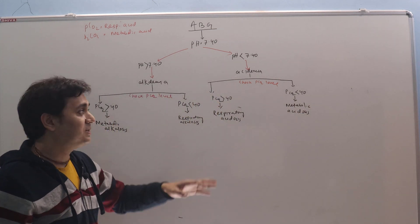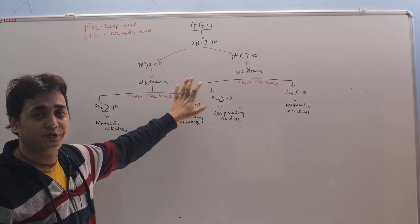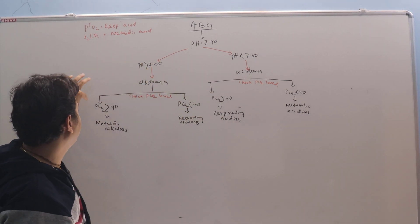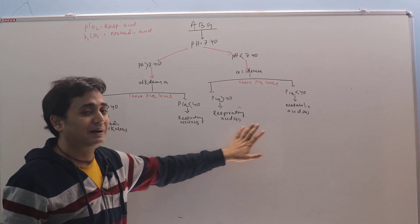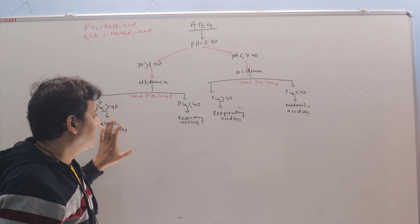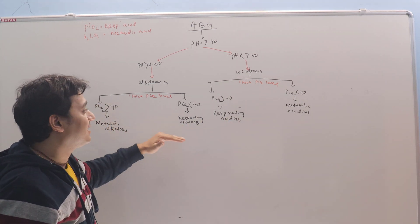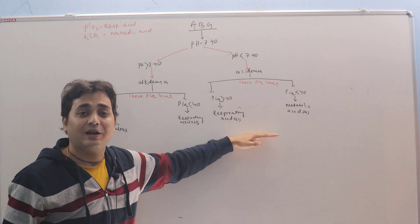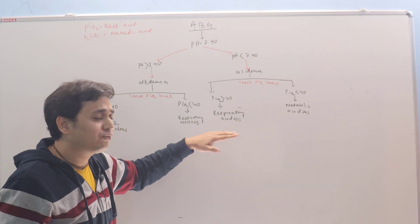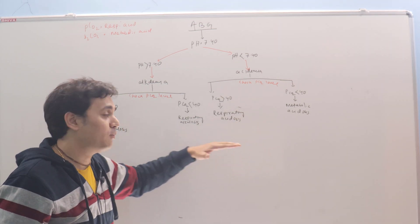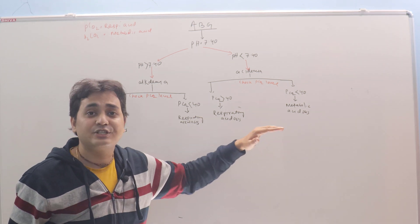So you can find out that without seeing the bicarbonate level, even by seeing only the pH and the PCO2 level, we can diagnose the primary disorder. Now it doesn't end here. Diagnosing the primary disorder does not end here. We have to find out the differential diagnosis of these things so that you can treat it, you can fix the condition, and the person gets better.